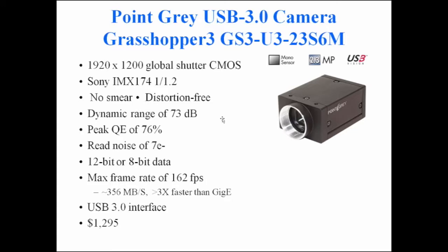There's also a CMOS camera with really high performance: a couple of megapixels, 73 dB dynamic range, very high quantum efficiency, read noise of only 7 electrons (comparable to cooled CCD cameras), and it can do 162 frames per second — about 360 megabytes per second, three times faster than GigE. With USB3 interface, it's $1,300. This is the camera currently used for tomography at Sector 13, originally bought for pink-beam tomography because at $1,300 it's affordable to replace, but the data quality is high enough to use for monochromatic beam too.